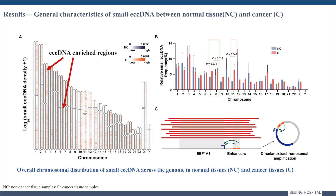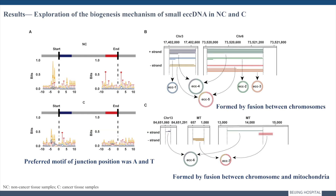Notably, in some samples, ECC-DNAs were found to contain the full-length eukaryotic translation elongation factor 1 gene with two enhancers, indicating additional gene copies and more expression opportunities. The consensus sequence of junction regions showed an AT-base preferred motif, and figure B shows the same fragments from chromosomes 3 and 6 involved in multiple ECC-DNA events. Moreover, mitochondrial DNA fragments also contributed to the formation and evolution of ECC-DNAs, suggesting mitochondrial fragments might cross the nuclear membrane and fuse with DNA in the nucleus.